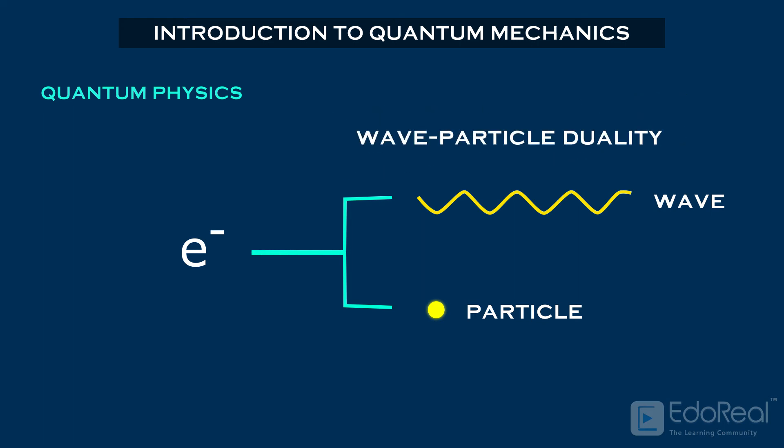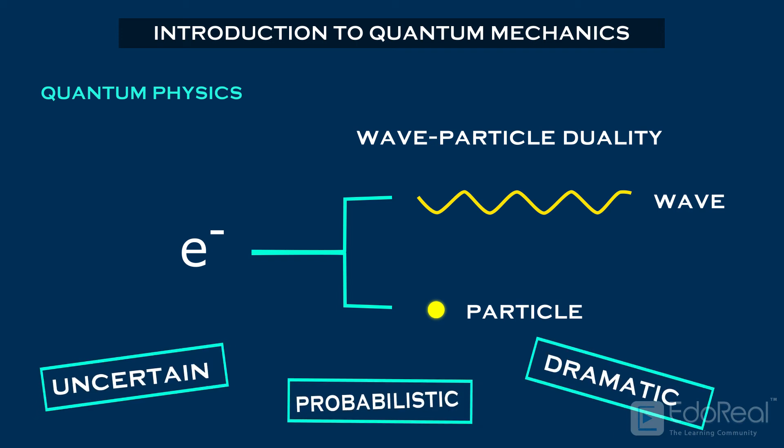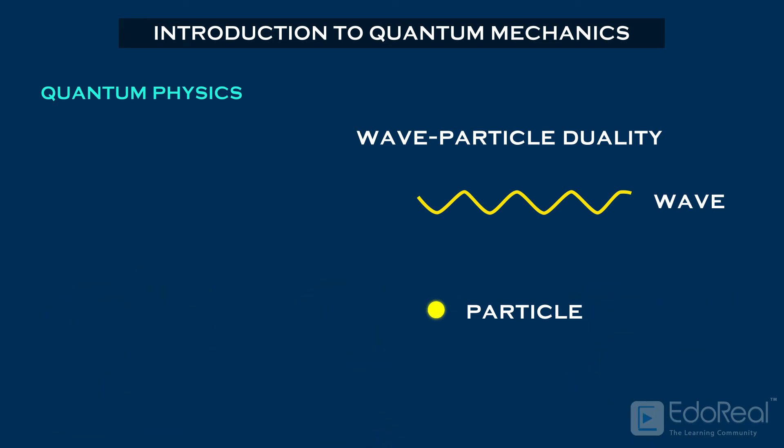Because of this wave-particle duality, it has become uncertain, probabilistic, and dramatic to perceive quantum theory. We have two experiments to prove that the quantum objects can have two states.